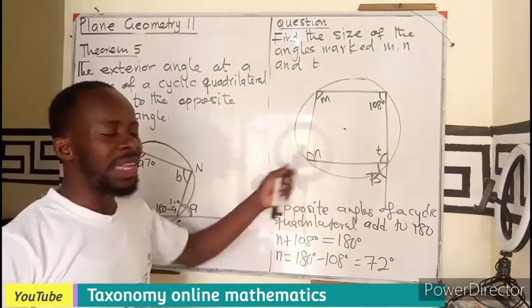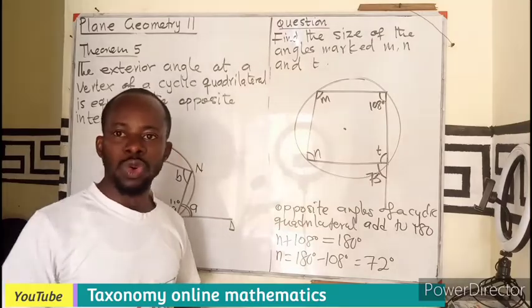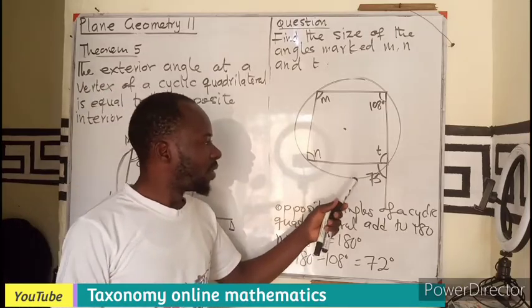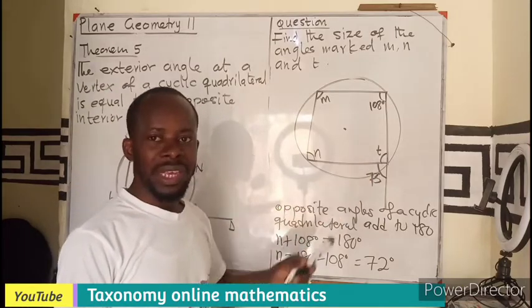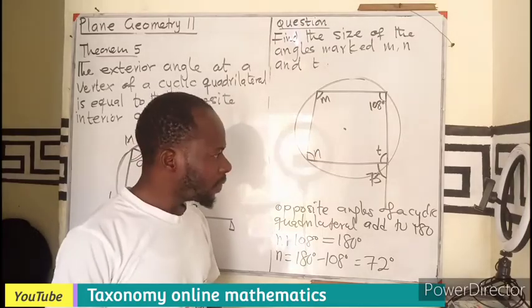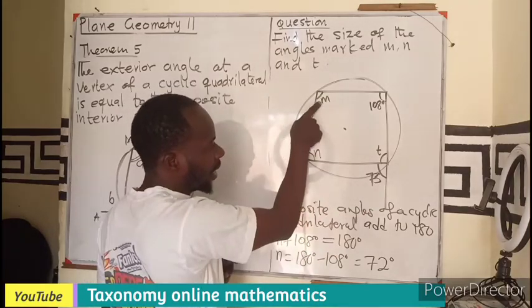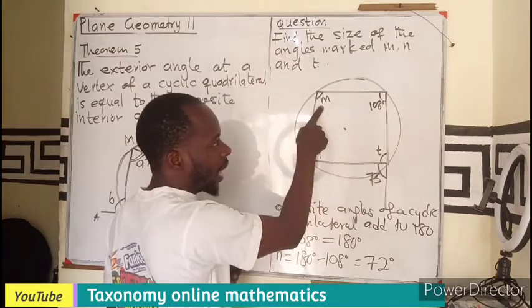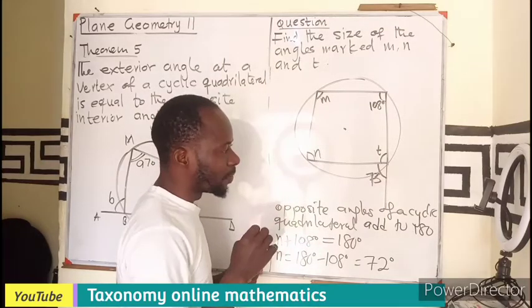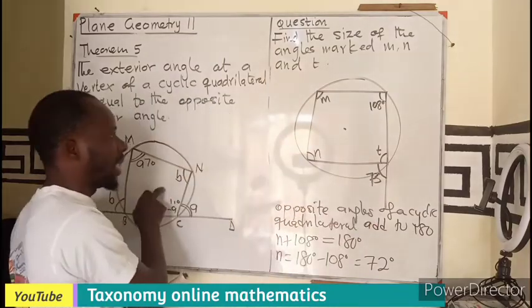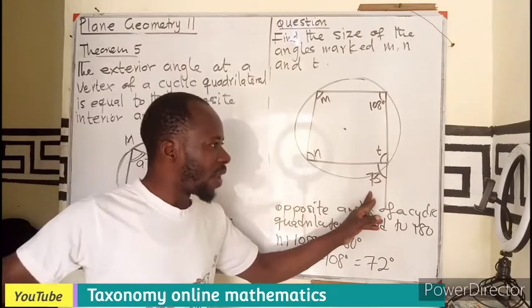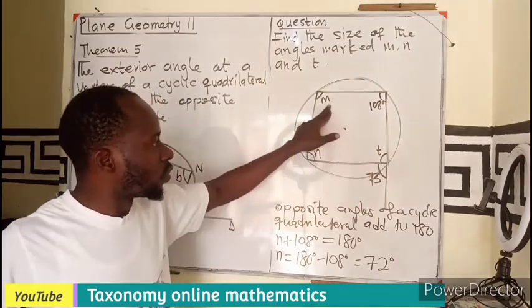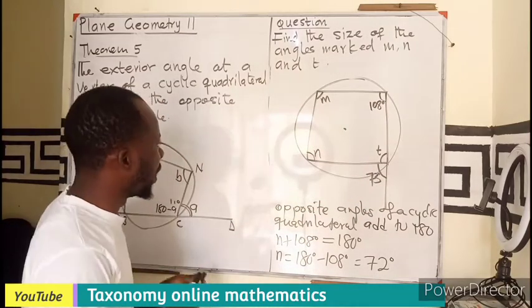So the value of N is supposed to be 72 degrees. All right. So as that is out of the way, we can easily find T as angle on a straight line. We can also see that this angle is opposite to this angle. M is opposite to T. So M plus T can also give us 180. But this is the exterior angle per the property we have here. This is the exterior angle at the vertex of a cyclic quadrilateral. So this angle is also equal to the angle there.